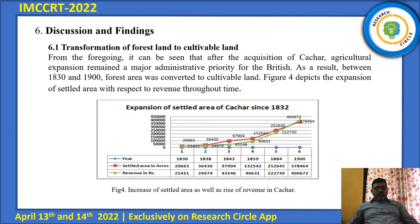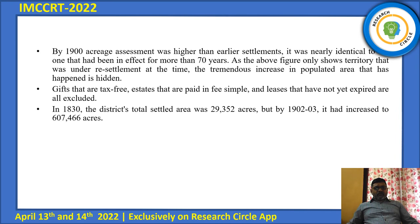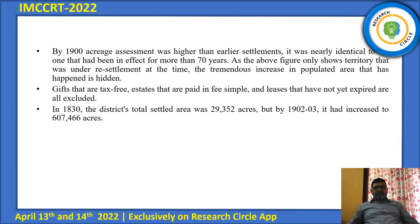This table shows how, over a period of time, there was an extension of agriculture from 1830 to 1900. We can see that by 1900, the aggregate assessment was higher than the earlier settlement — nearly identical to the one that had been in effect for more than 70 years. The figure shows the territorial area that was under resettlement and the tremendous increase in population area that had occurred.